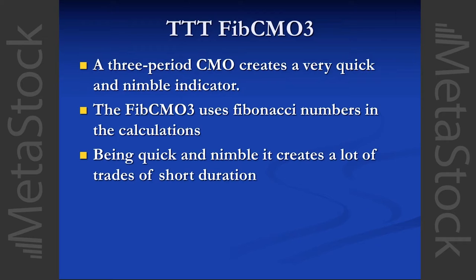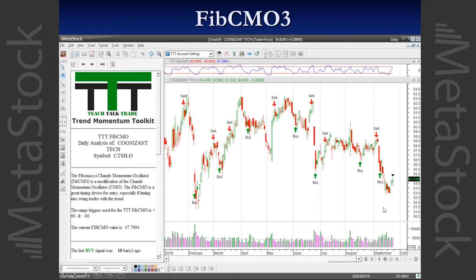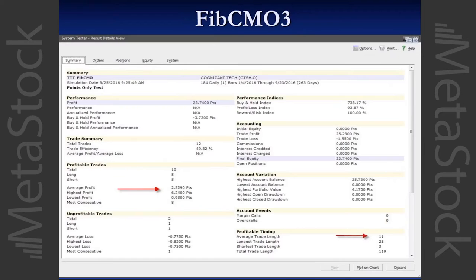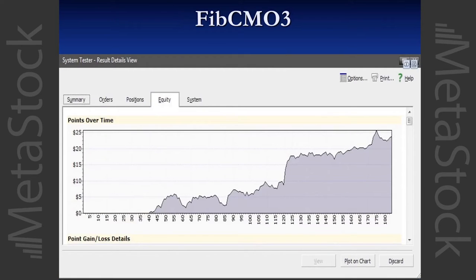The FIB CMO — I used this years ago and added it into the toolkit because some people like Fibonacci numbers. I incorporated the Fibonacci numbers into the CMO 3. This is a very quick and nimble Momentum Oscillator — it creates a lot of trades in a short duration. So if you're a trader who likes the action, just remember this is a quicker one. It's similar to the CMO, but I include it so you can visually see the type of equity curves these are producing.